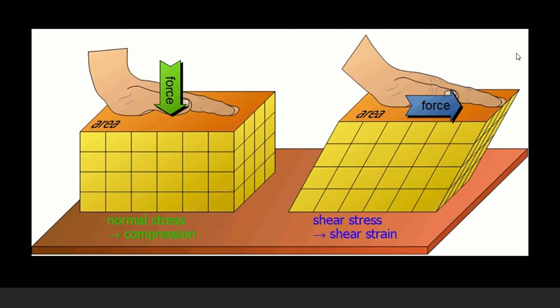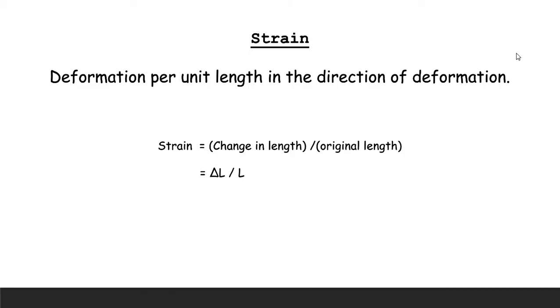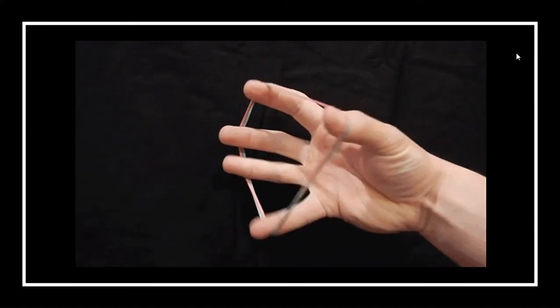Strain is a deformation per unit length in the direction of deformation. That is a change in length towards the original length. It is known as strain.